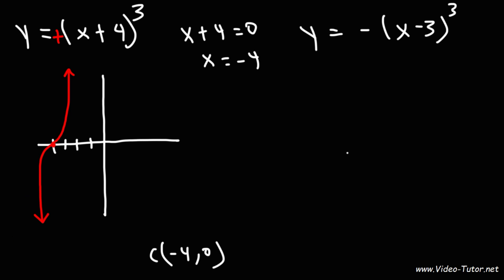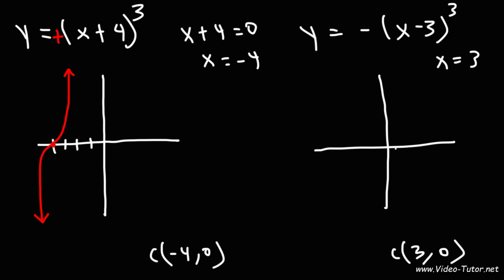Now let's move on to the next example: negative x minus 3 to the third power. If we set x minus 3 equal to 0, we get x is equal to 3, so the center is going to be shifted 3 units to the right. We do have a negative sign in front of the cubic function, so the graph is going to flip, meaning this function will always be decreasing. So as you move from left to right, it's always decreasing now.